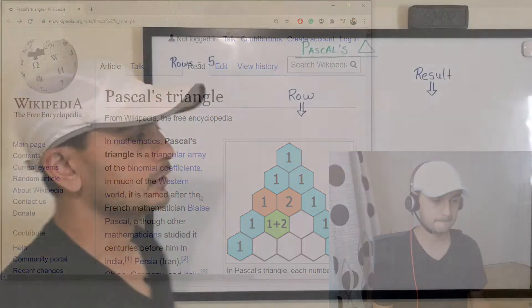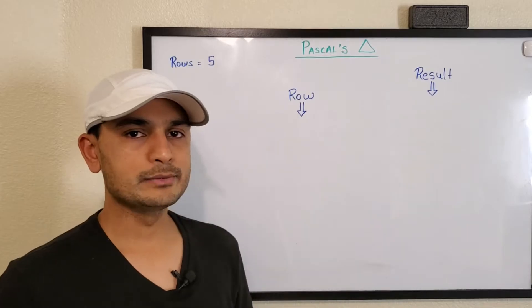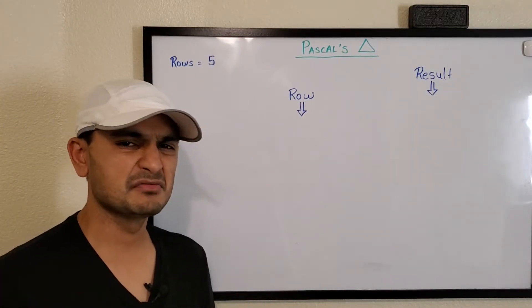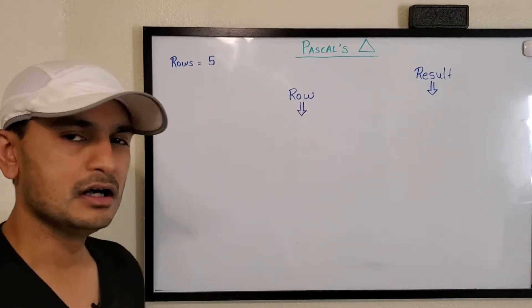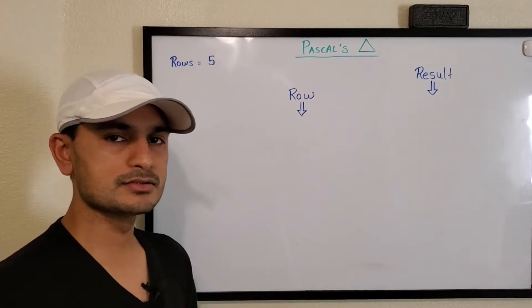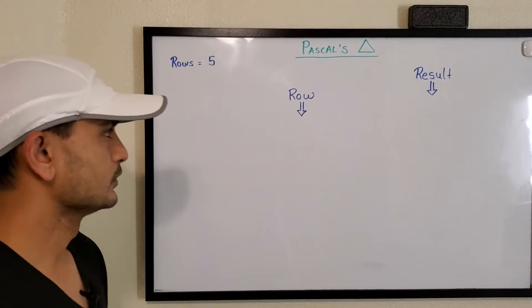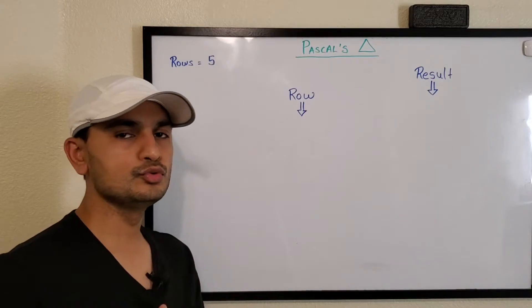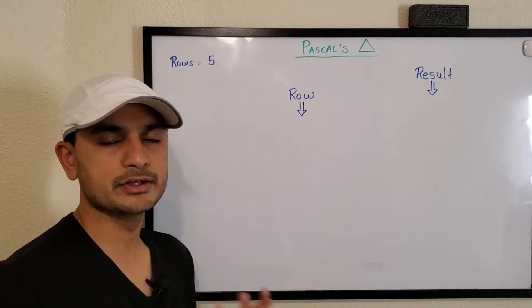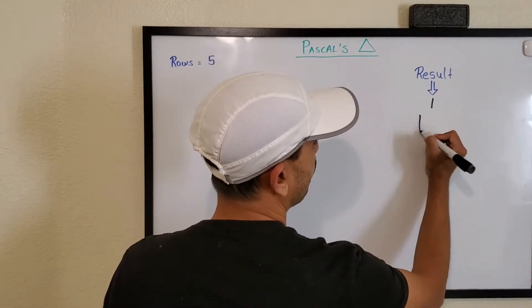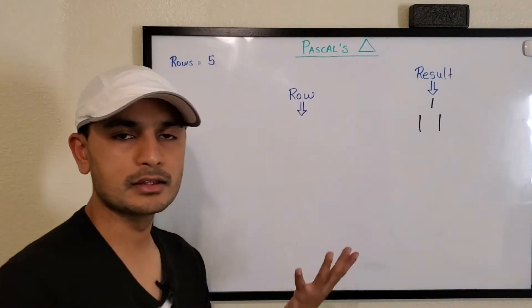Okay, this is our Pascal's triangle whiteboard. For simplicity we'll take five rows, that's enough. We can extend it, it's just the same approach but for more rows. So for simplicity we'll just do five rows. Obviously the first two rows are straightforward: it's just one, and then one one. There's nothing into it so we can take that.